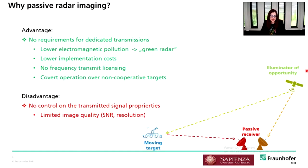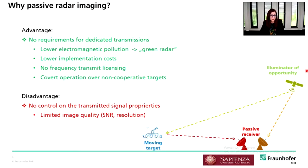Passive ISAR is a powerful tool to image targets using a system with no requirement for dedicated transmission, giving us a long list of advantages. However, since we are using an illuminator of opportunity — a non-cooperative transmitter — we have no control over the transmitter signal properties, which can affect image quality in terms of both SNR and resolution.